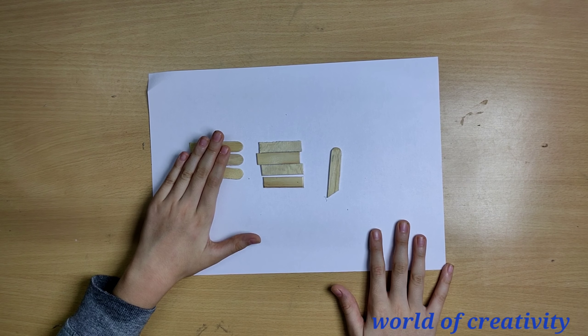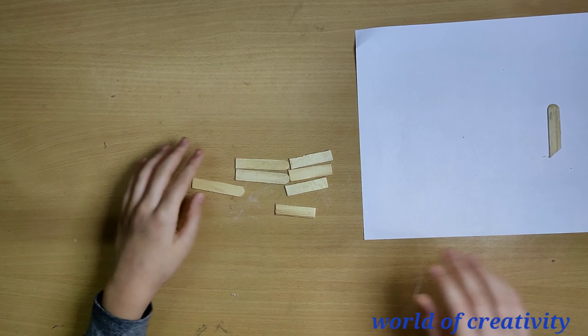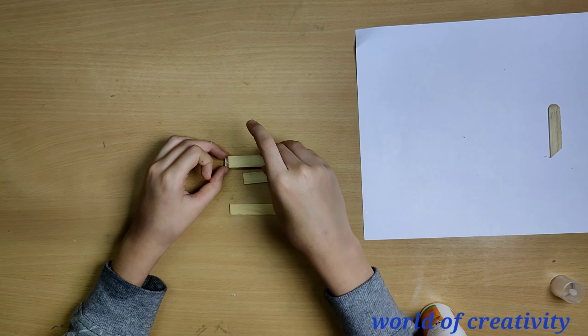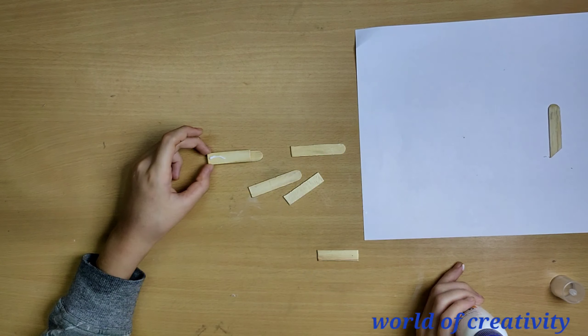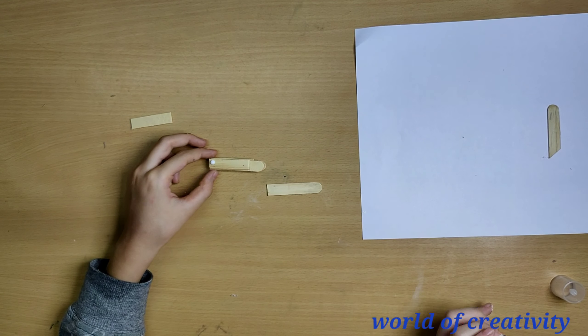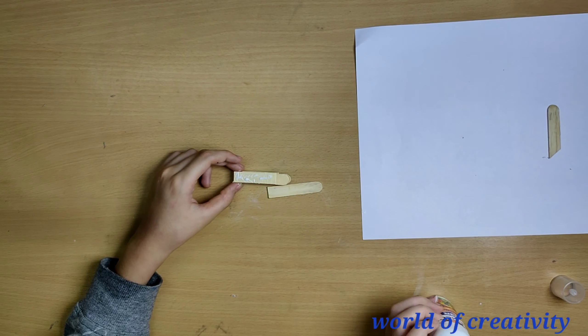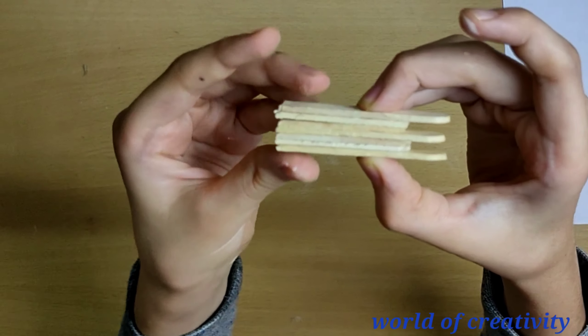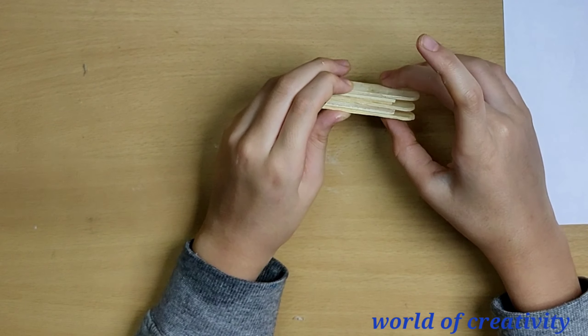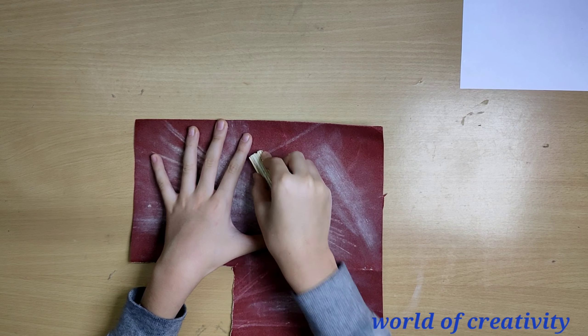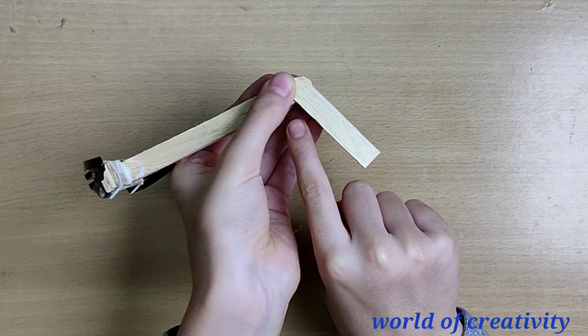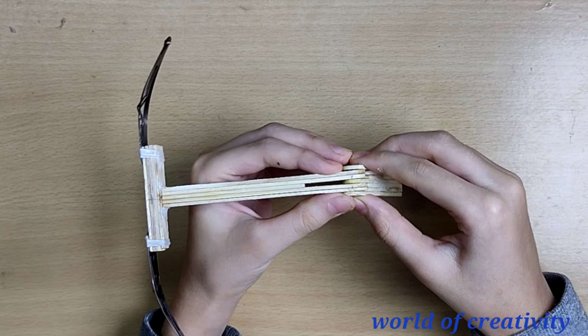Now we will stick these popsicle sticks to make our rear part of the crossbow. Now it should look like this. We will apply some super glue on it and sand it to make it smooth. Now we are going to attach the middle part with the rear part of our crossbow with super glue.